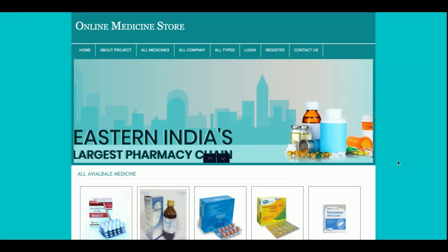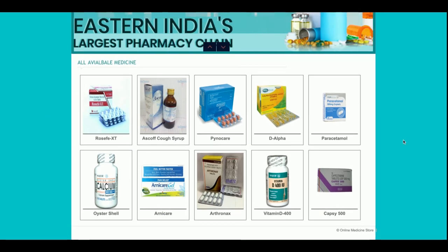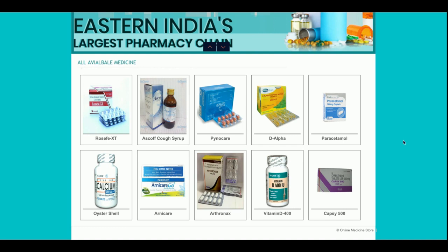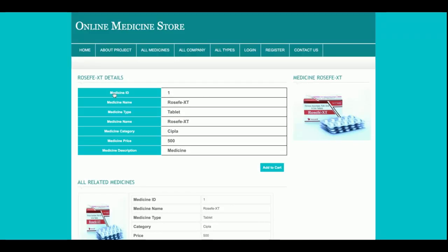Let's start with the functionality of this project. This is the home page, and as you can see, medicines are displayed just below the banner. These medicines are coming directly from the database. If you want to add more medicines to the project, you can easily do so from phpMyAdmin — there is no admin interface for adding medicines. If you want to see the details of a medicine, just click on it.